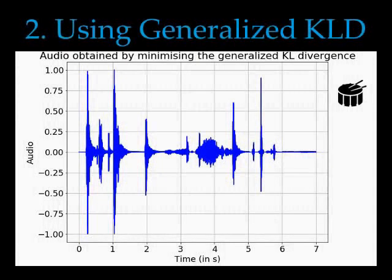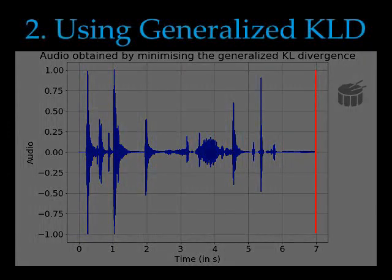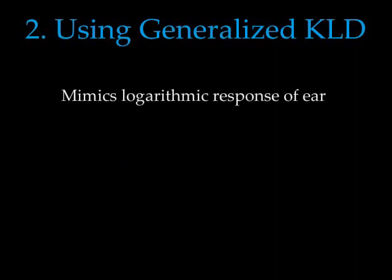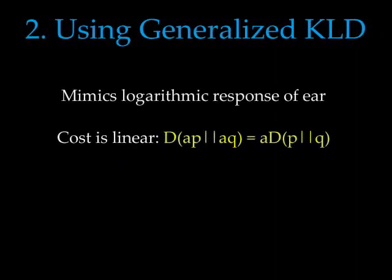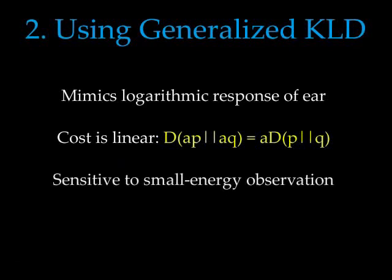The same source obtained by minimizing the generalized KL divergence sounds like this. This audio sounds much better as the generalized KL divergence mimics the logarithmic response of the human ear and being linear in the input captures more of the low energy signal components.